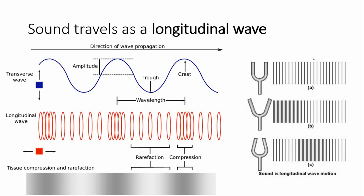A series of compressions and expansions propagate along the spring. Compressions are areas where coils are momentarily close together; expansions or rarefactions are regions where coils are momentarily far apart. Compressions and expansions correspond to the crests and troughs of a transverse wave, and sound is a perfect example of a longitudinal wave.